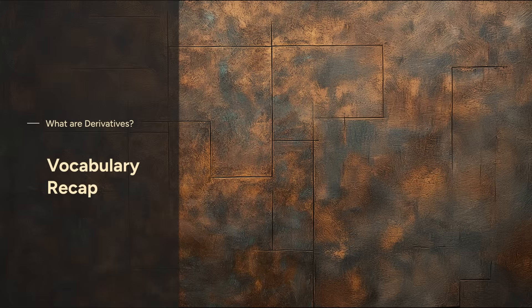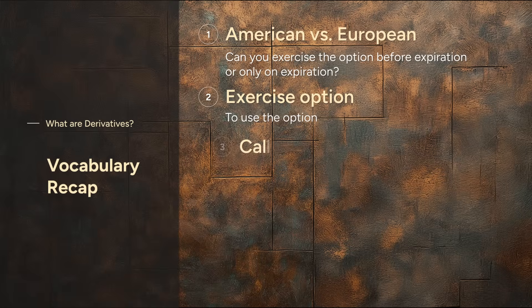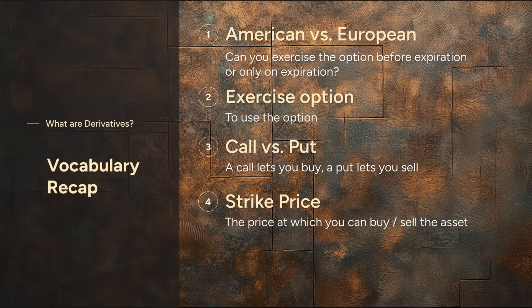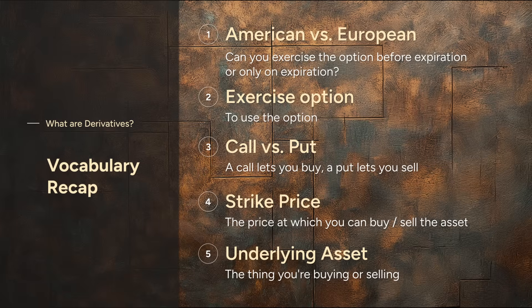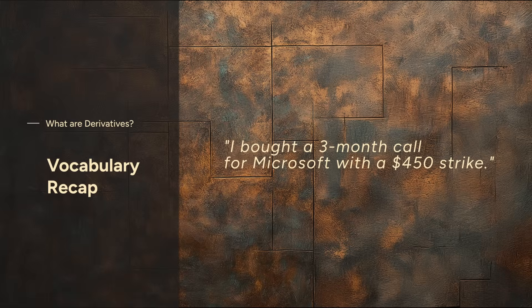Let's recap the terms we've seen so far. American options you can exercise anytime before the expiration date; European options only on expiration day. Calls let you buy and puts let you sell at the strike price. All options are tied to an underlying asset, like a stock. Master this jargon and you'll start saying things like, 'I bought a three-month call for Microsoft with a $450 strike.'